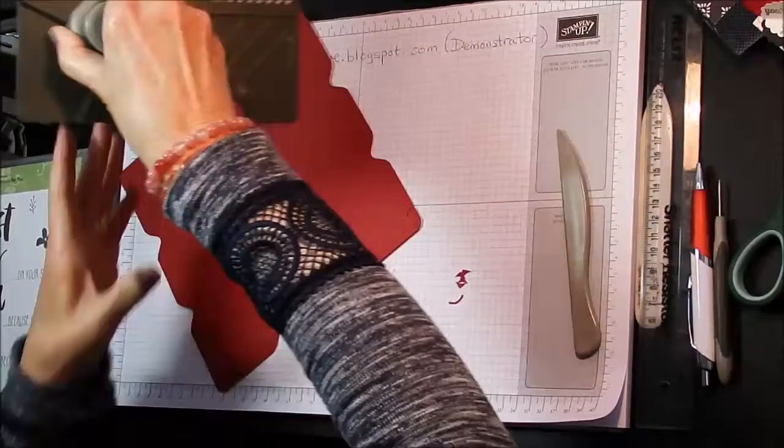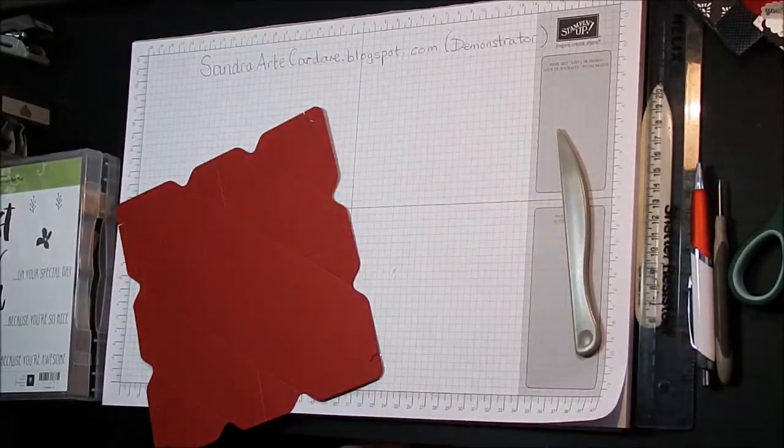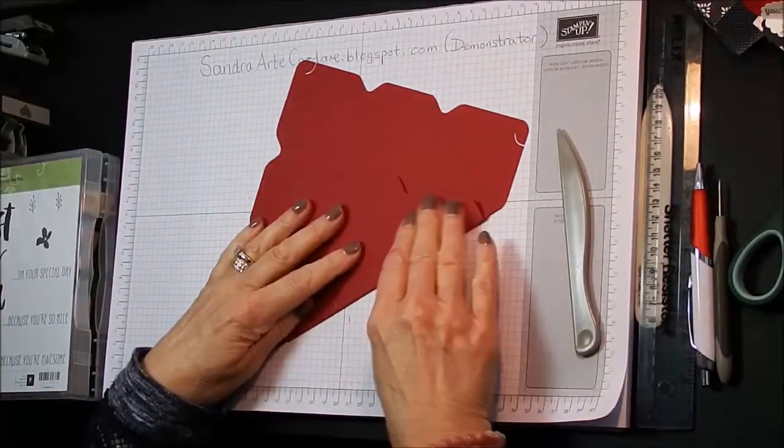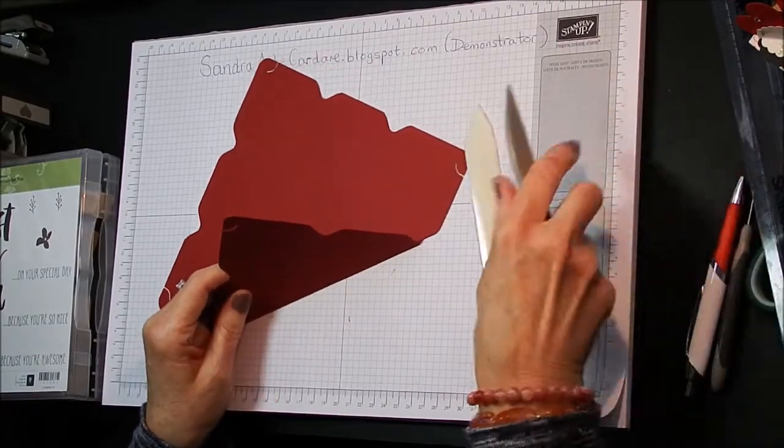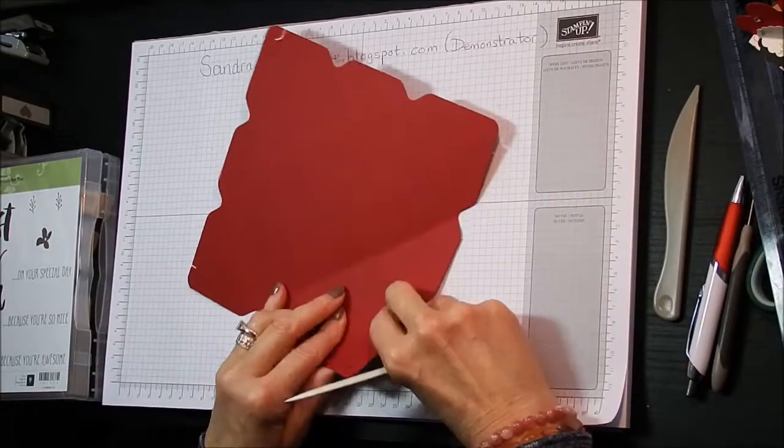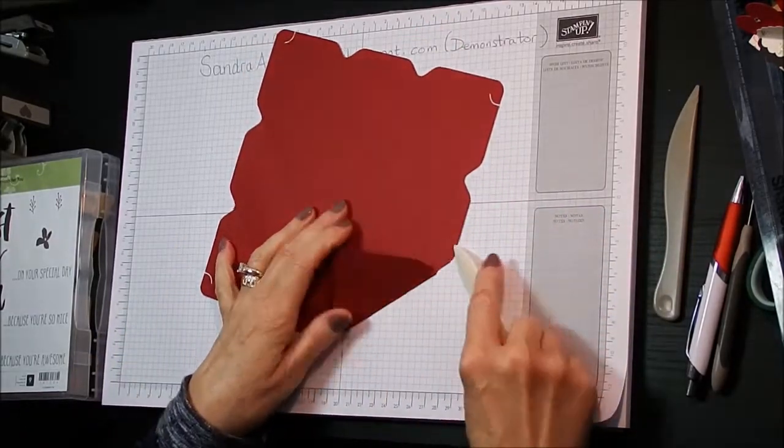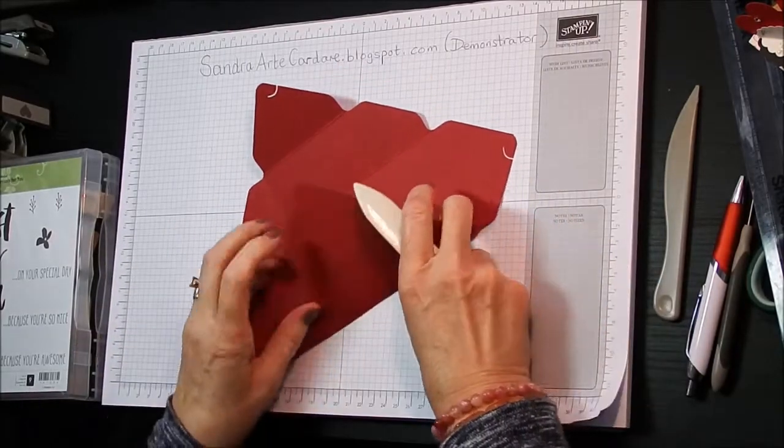And that's all finished with the board now. Just get rid of all these bits. And then you do the same as you would normally do. You just go round, I'll get my copper bone folder. I like this. And you just burnish all your score lines as you would for any other box. Go round and do that.